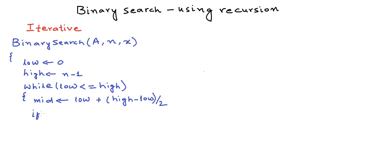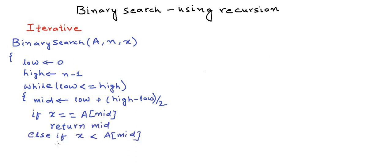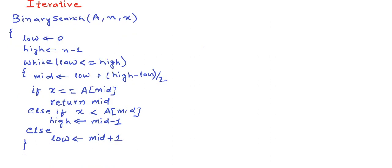Now there are three conditions. If x is equal to the middle element, we have found x in the array, so we return the index mid and exit. Else if x is less than the middle element, we set high to mid minus one, discarding anything on or after mid. Else if x is greater than the middle element, we set low to mid plus one. If we come out of the while loop without finding anything, we return minus one to say that x does not exist in the array A.